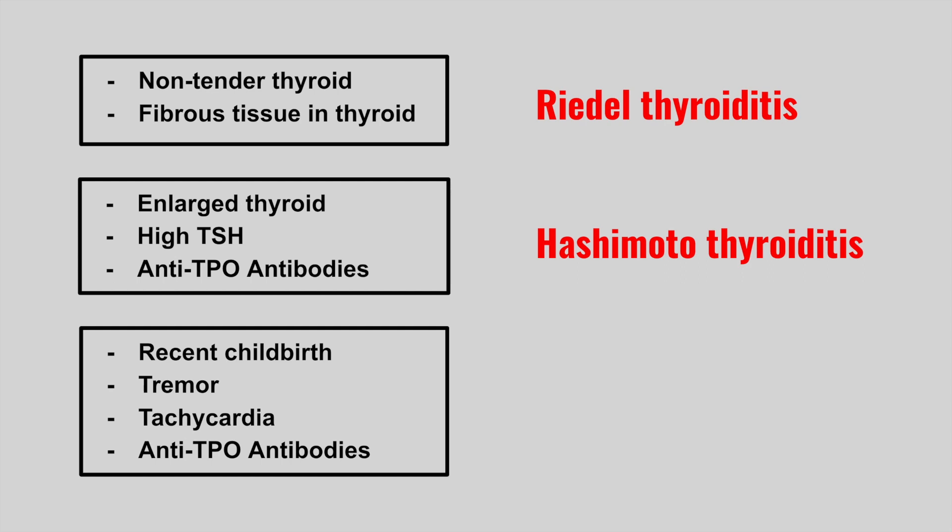The next patient has a recent childbirth, tremor, tachycardia, and anti-TPO antibodies. This is postpartum thyroiditis. For postpartum thyroiditis, we mention somebody that recently had a baby, and they can develop hypo- or hyperthyroid symptoms, and it usually goes away after a little while.